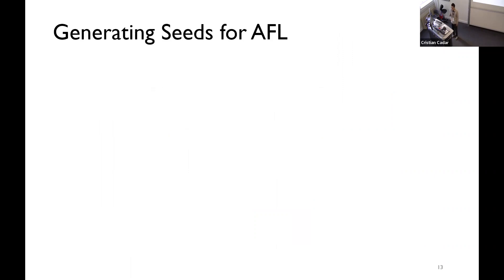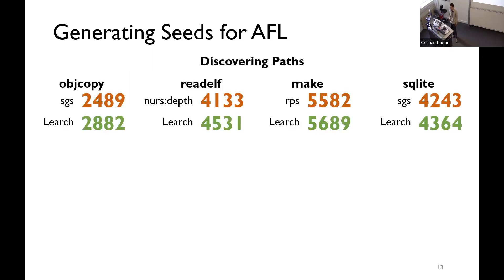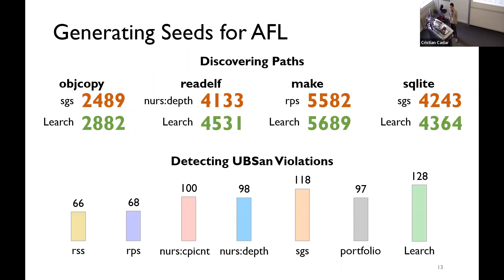As you know, AFL takes some initial seeds for running the fuzzing. We use the seeds from, the test cases from symbolic execution to generate this initial seeds. We found that the seeds from NERJ can produce more pathways. And, also find, can help AFL to find more UB-sanitizer violations.